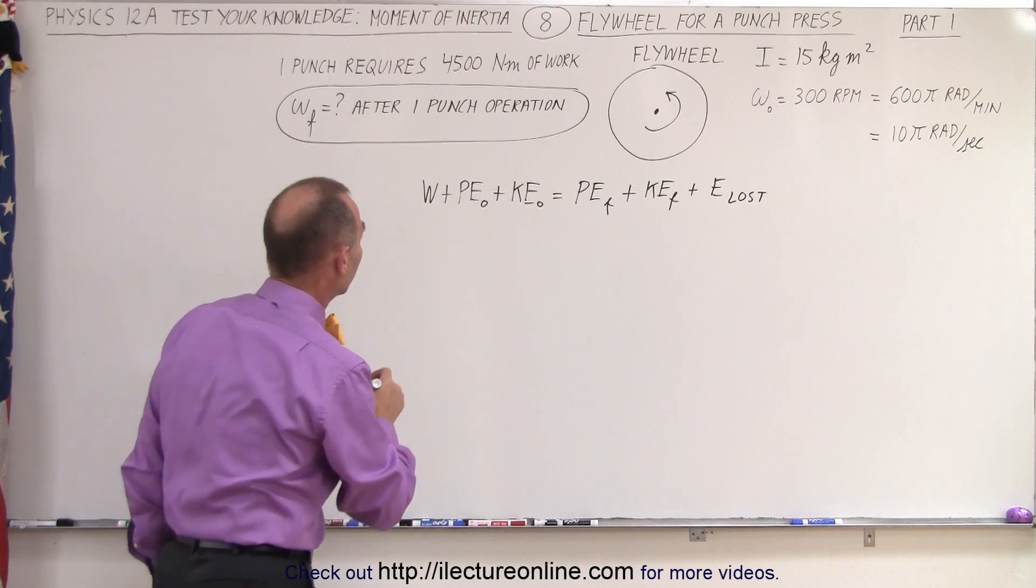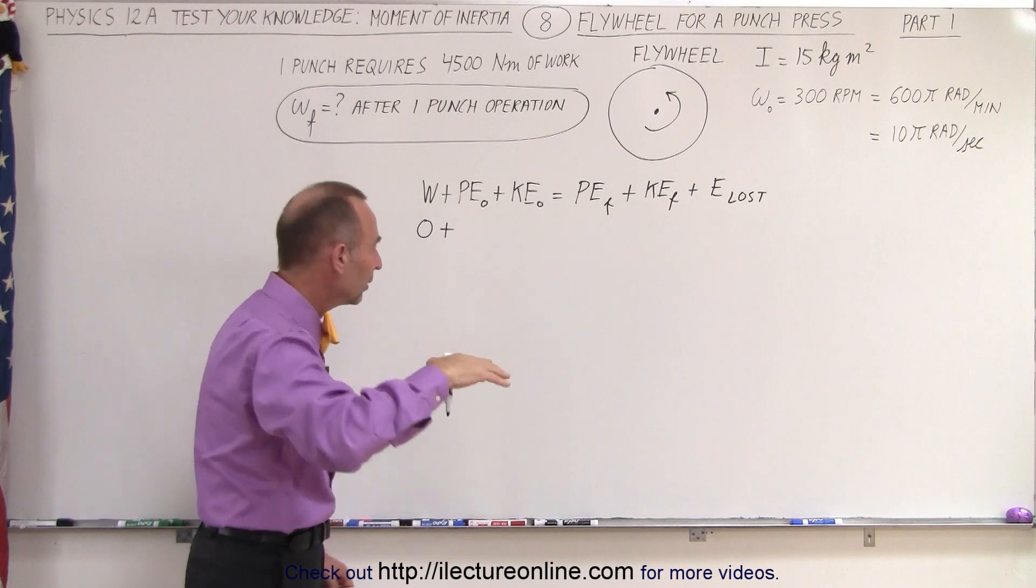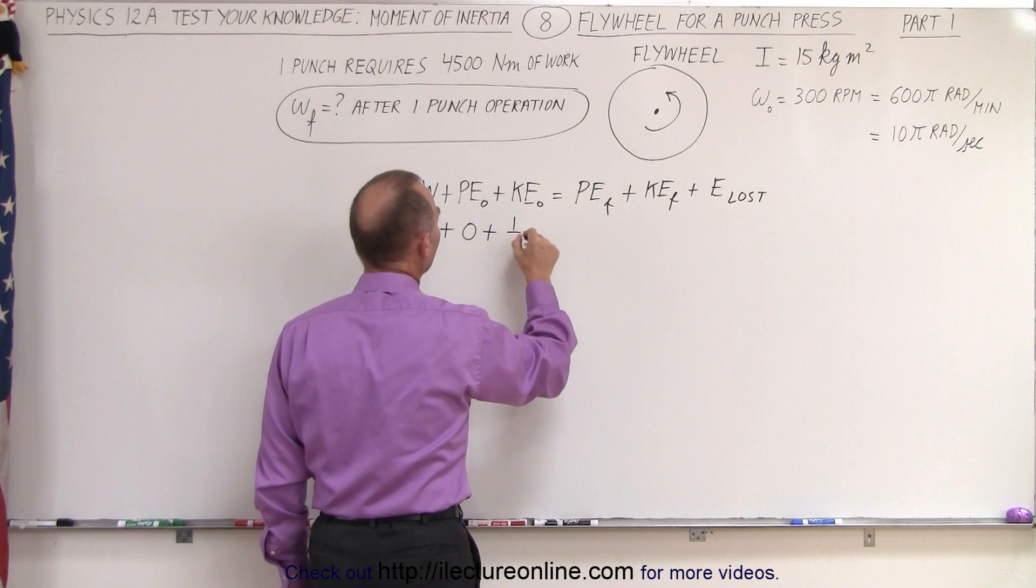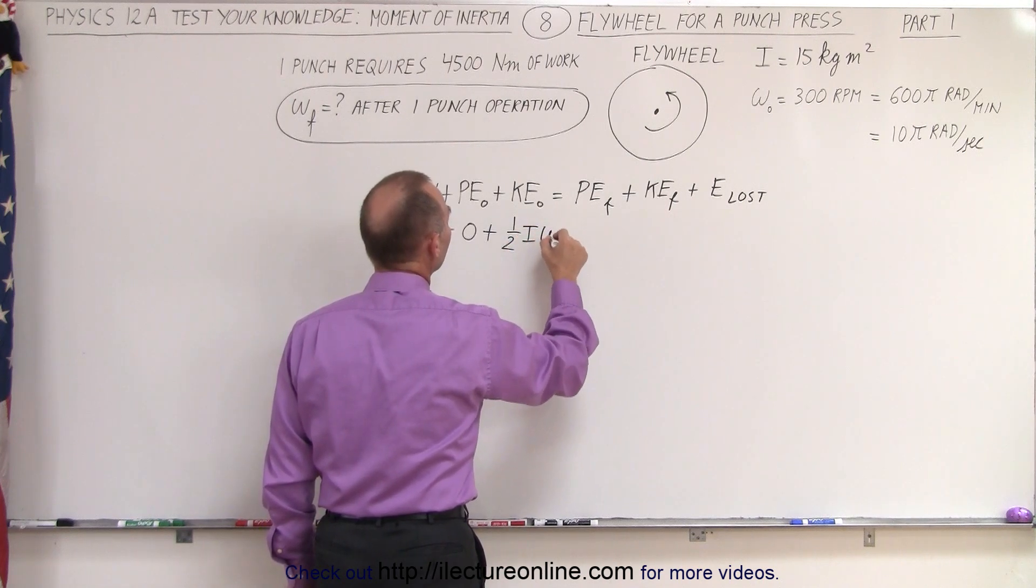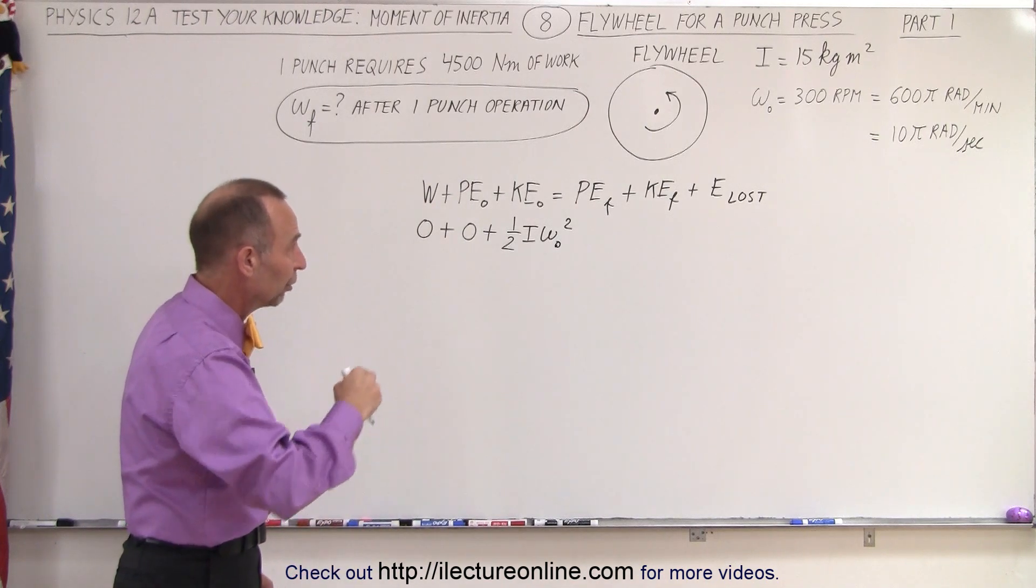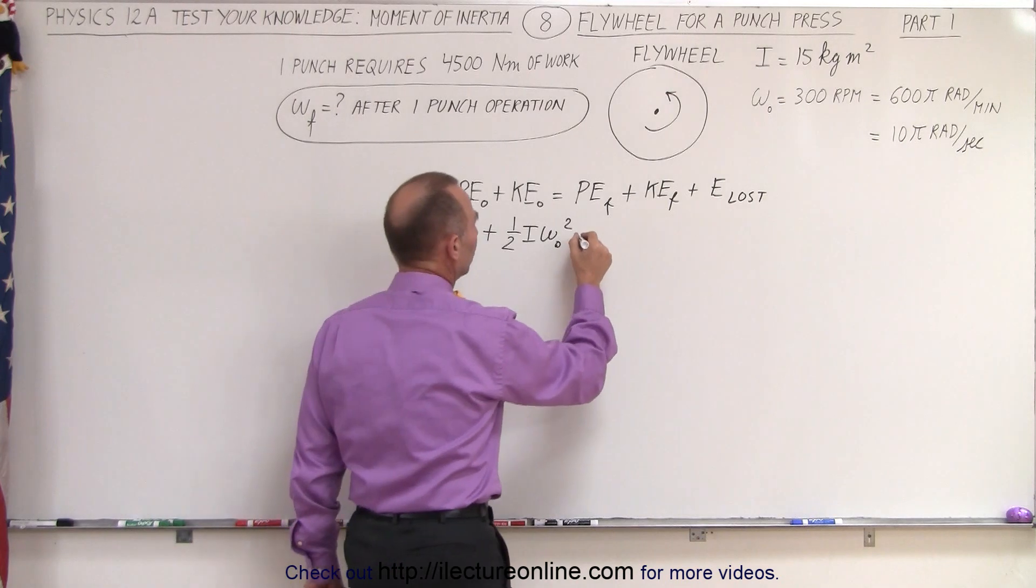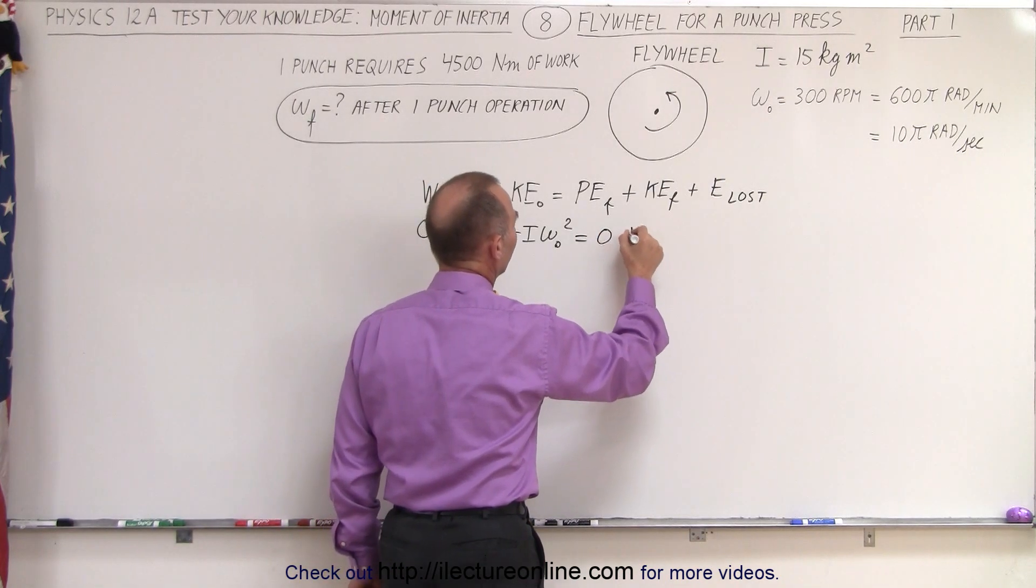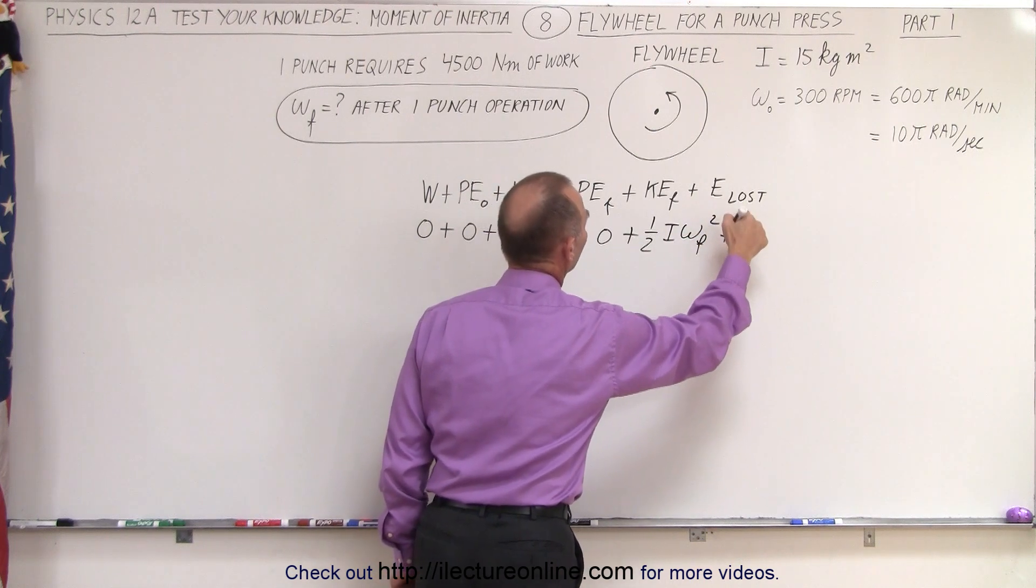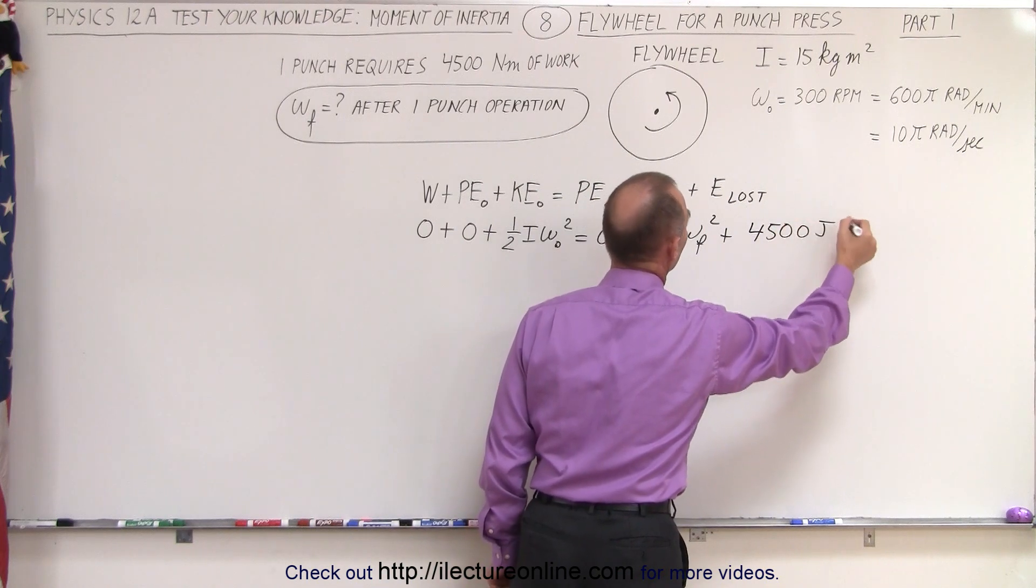All right, any work put into the system, that will be zero. Since we have a flywheel which is rotating horizontally, there's no change in height, so that would be zero, plus the initial kinetic energy will be one-half I ω initial squared. There's only rotational kinetic energy because the flywheel doesn't go anywhere. There's no translational motion. Potential energy final is zero. Kinetic energy final would be one-half I ω final squared plus the energy lost will be the 4,500 joules required for a single punch.